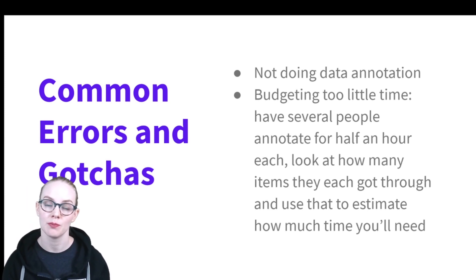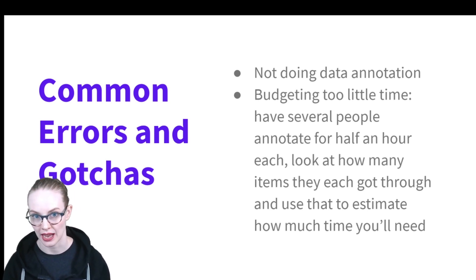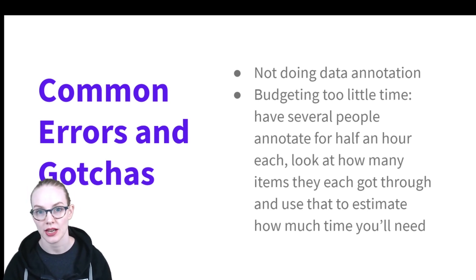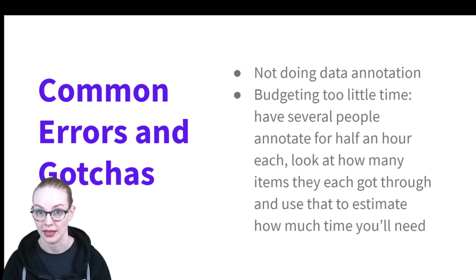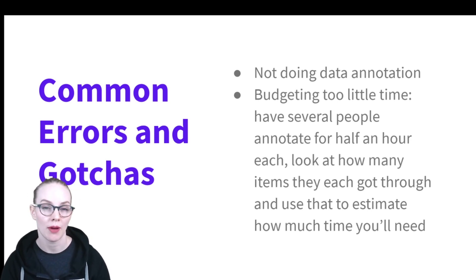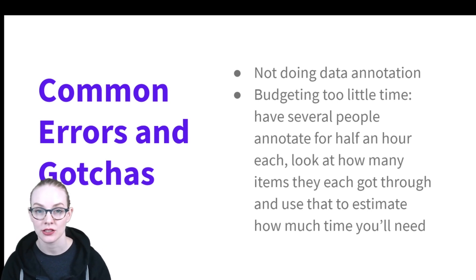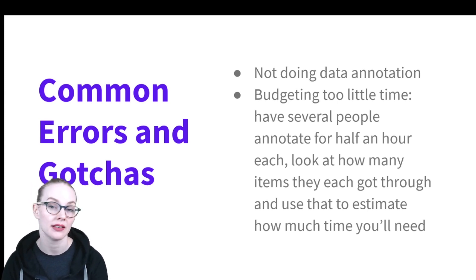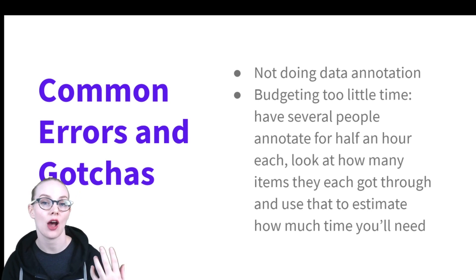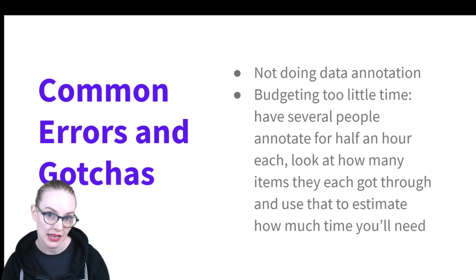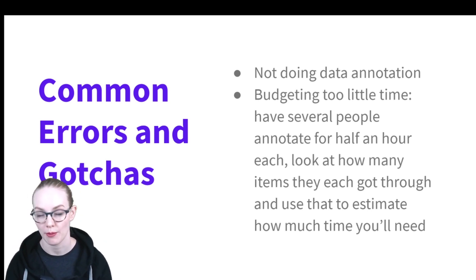Another error is budgeting too little time. Data annotation takes a long time, particularly if you're applying a lot of labels. My recommendation for figuring out how long it will take is to have a couple of people spend half an hour annotating, see how many items they each get through, and use that as a baseline to figure out how much time you should budget.